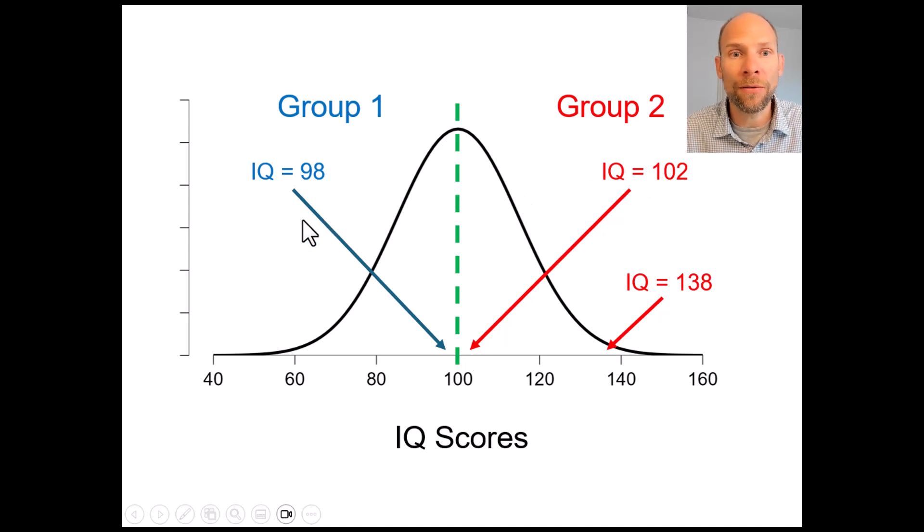and likewise if we have an individual with an IQ score of 65 which is very low then this would be an individual who is very different in terms of cognitive functioning from an individual with an IQ score of 98 and yet they would be in the same group. So that doesn't make a whole lot of sense